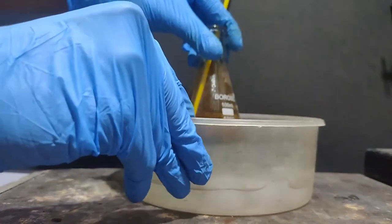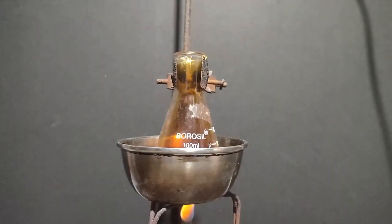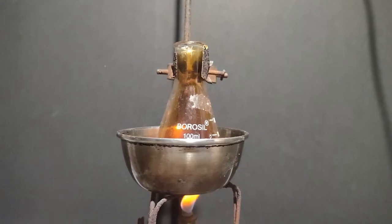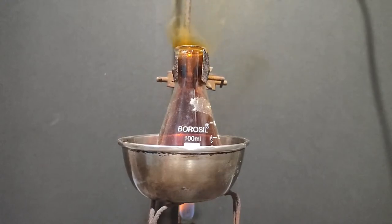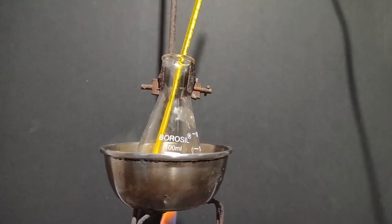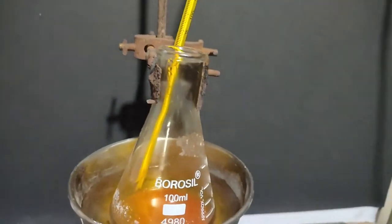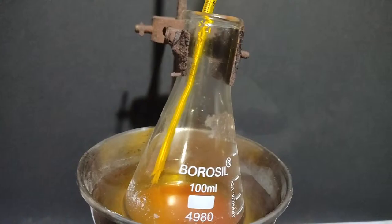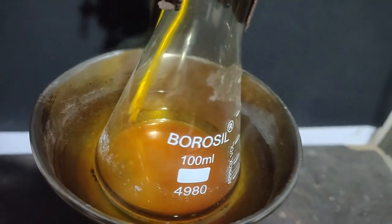Then the flask was removed from the ice bath and heated on a water bath for 2 hours. Again, brown fumes started evolving. After half an hour, evolution of brown fumes subsided and I placed a thermometer in the water bath just to have a look at the temperature.